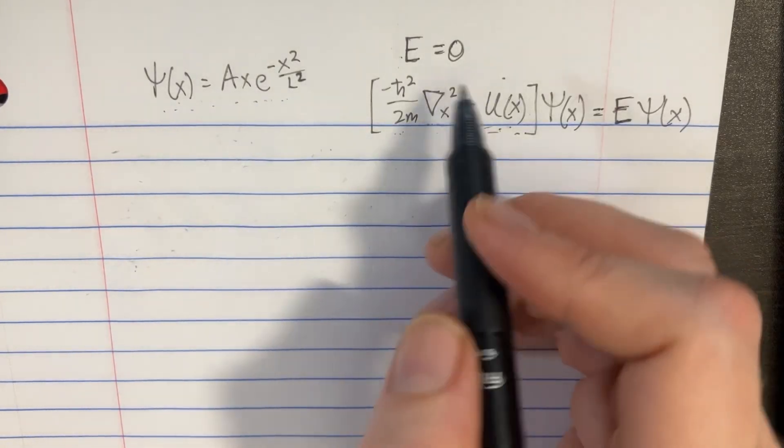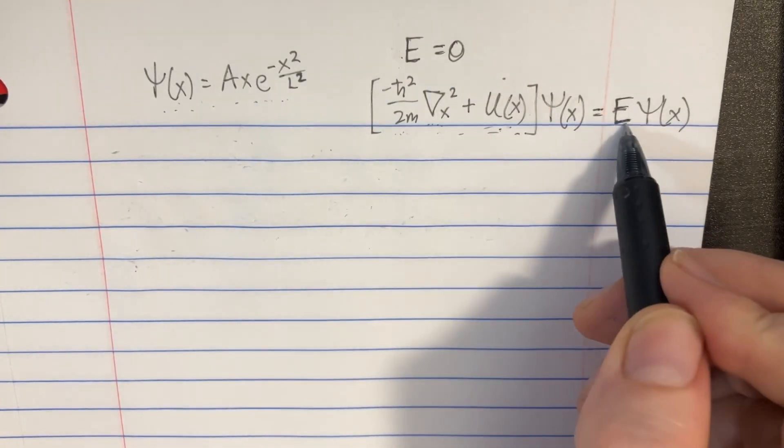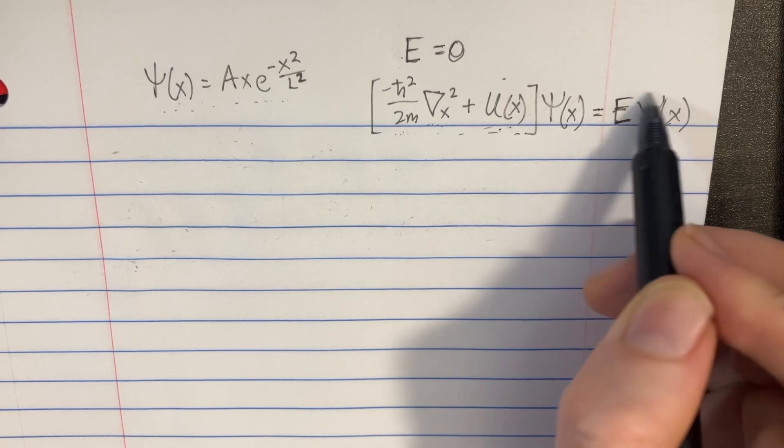We're given this wave function here, and we're told that the energy is equal to zero, so we can plug that in here, and so this side will equal zero.